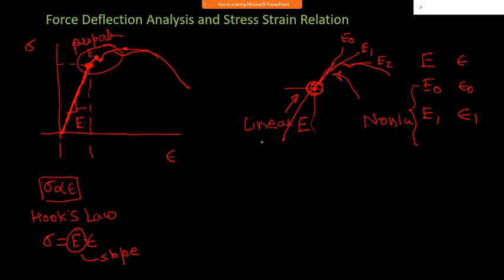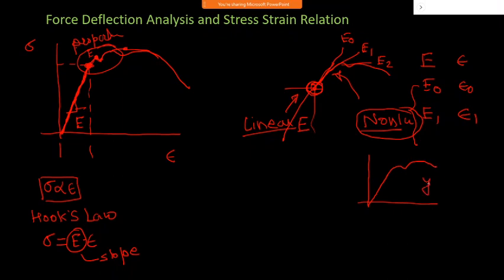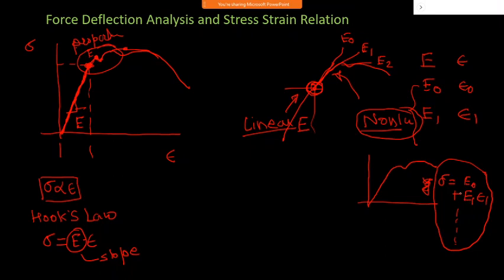In the non-linear zone, numerical techniques are needed. You can fit the curve with a polynomial like stress = E1×epsilon + E2×epsilon², but this simple polynomial may not fully represent the stress-strain curve. This is what happens in one direction; we have not assumed another direction yet. This completes the conversion of force-deflection to stress-strain curve.